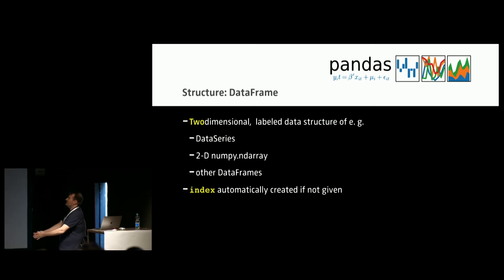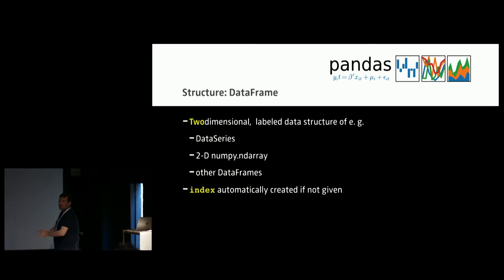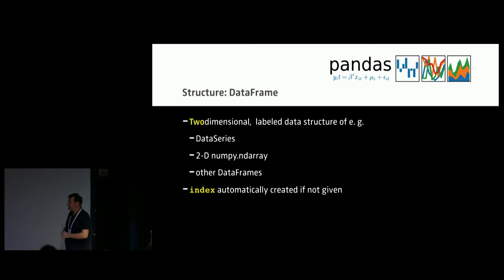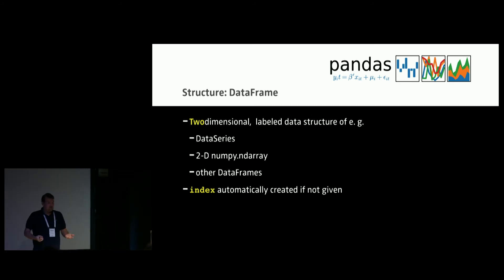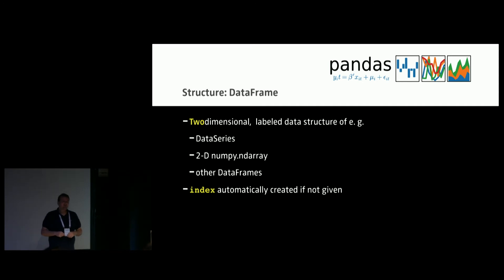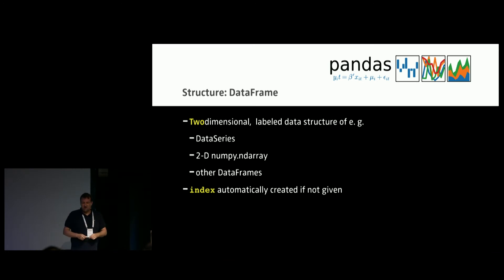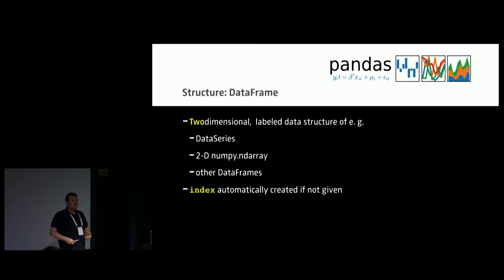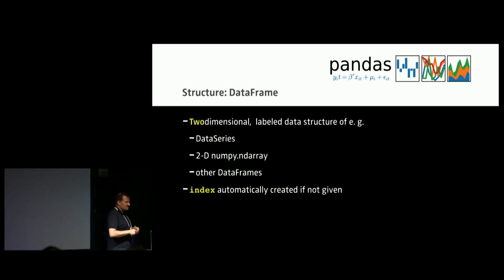A data frame is a two-dimensional labeled dataset. It can contain data series, 2D NumPy arrays, or even other data frames — it's a really huge and powerful container. The index basically holds everything together, and it's created automatically if not given.